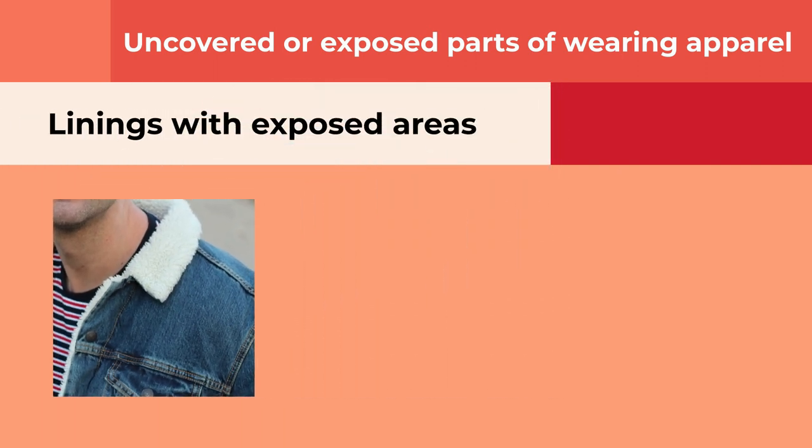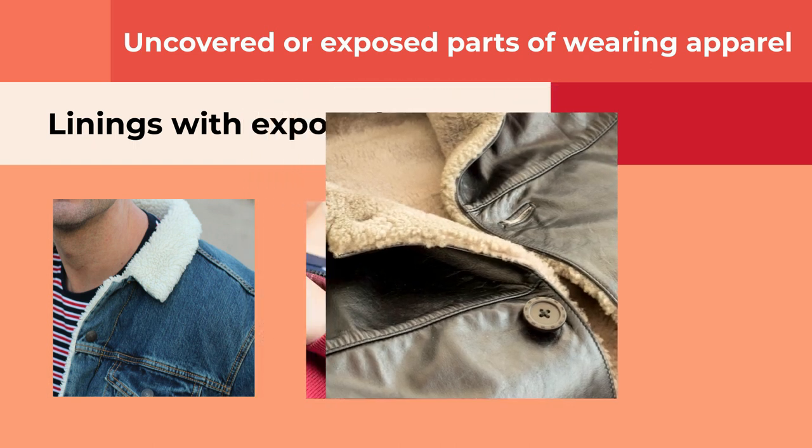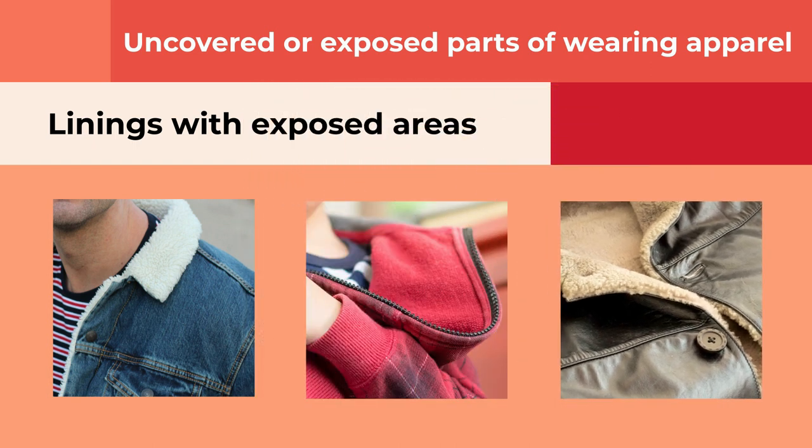For garments with exposed linings like these jackets, both the exposed inside lining and outside fabric need to be tested unless they meet an exemption. Please note that the exemptions do not apply if only the outside fabric meets an exemption. For example, if you have a plain surface fabric that meets an exemption on the outside, but an exposed raised surface fabric lining that does not meet an exemption, then you will need to test the exposed lining. Raised surface fabrics can catch fire more quickly than plain surface fabrics.